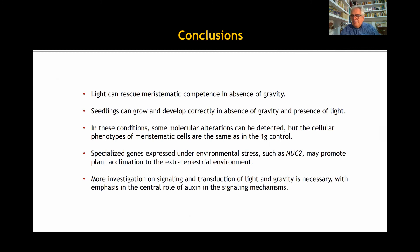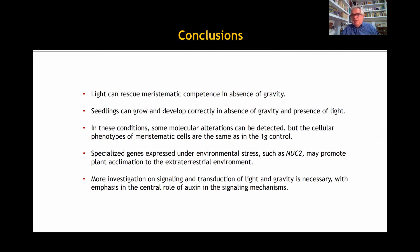In conclusion, light is a signal capable of rescuing disrupted meristematic competence at early developmental stages, as described in the absence of the two main tropistic cues that drive and regulate plant growth on Earth, namely light and gravity. This is decisive for the long-term success of plant development. The incorporation of an illumination regime — in this case photoperiod — has been sufficient to attenuate or suppress the effects caused by gravitational stress, such that plants can grow and develop correctly in microgravity, showing only alterations at the molecular level but no changes detectable at the cellular level.